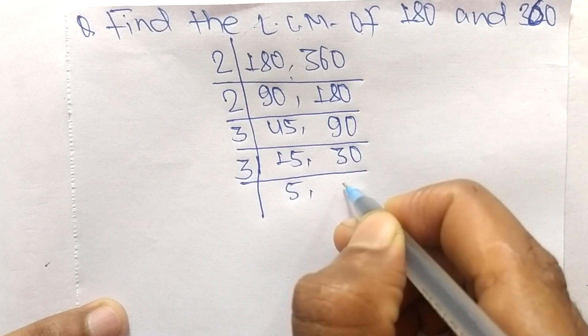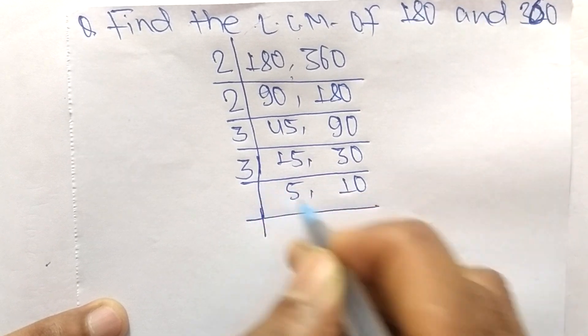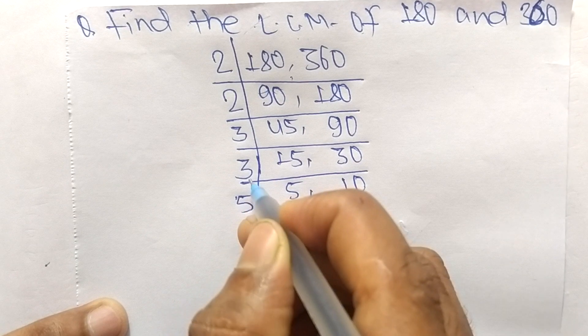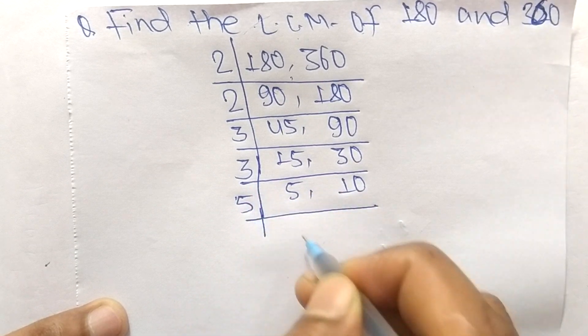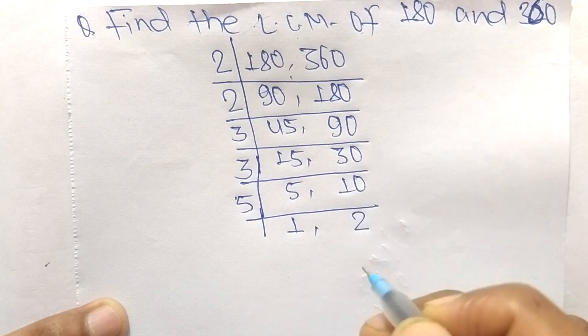Now 3 can't exactly divide 5 and 10, so now we take the greater number which is 5. 5 times 1 means 5 and 5 times 2 means 10.